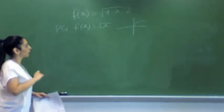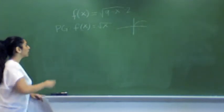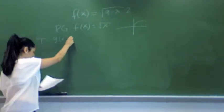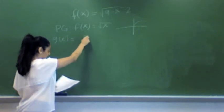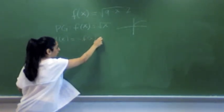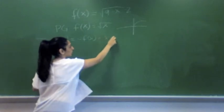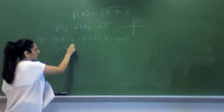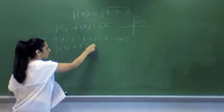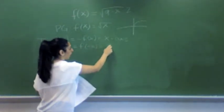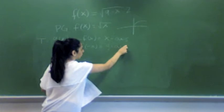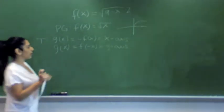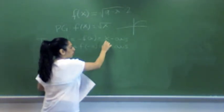Next, after you find what parent graph you're using, you want to find the transformations. For the transformations, the first thing you want to identify is the reflection that you're using. When x equals negative f of x, the reflection is over the x-axis. And then when g of x equals f of negative x, the reflection would be over the y-axis. So for this graph, we don't have any negative sign on the outside, so the reflection will be over the y-axis.